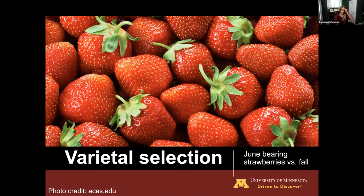Next, we have varietal selection, which is specific to strawberries. We have June-bearing and fall varieties. June-bearing strawberries become ripe typically before or just at the very beginning of first SWD detection in the field, so you can get those out before pest pressure is high. With fall strawberries, they're typically ripe when pest pressure is high and they're very vulnerable.